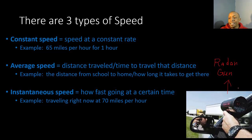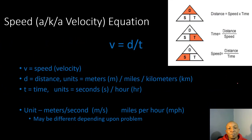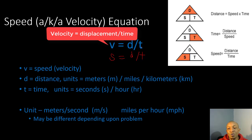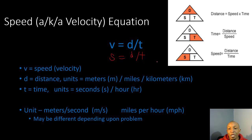Now let's take a look at our speed and velocity equation. Our formula is v = d/t, also written as s = d/t — velocity equals distance over time, or speed equals distance over time. Using the velocity and speed triangle: to solve for distance, cover d and you get speed times time; to solve for time, cover t and you get distance divided by speed; to solve for speed or velocity, cover s and you get distance divided by time.